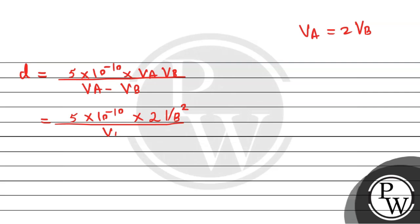Further, simplifying this we get 5 into 10 to the power minus 10 multiplied by 2 multiplied by VB.